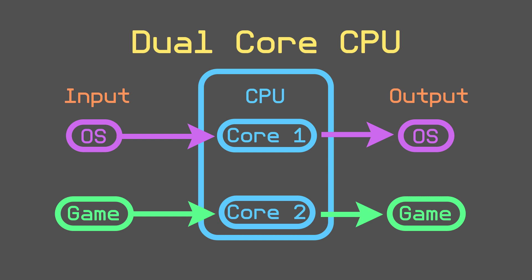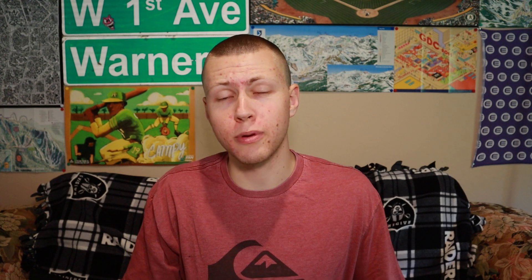Luckily, modern computers ship with CPUs that have multiple cores, so we can actually divide up work between these multiple cores to avoid context switching. This allows our computer to run the operating system and background processes on a couple of CPU cores, and then we can run our application on a different CPU core. We can even go one level deeper and multi-thread within our single application to divide work across multiple threads.